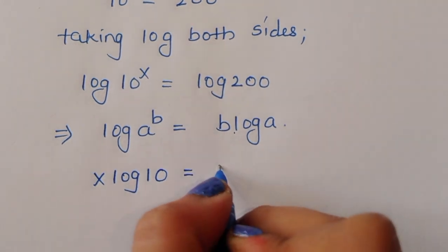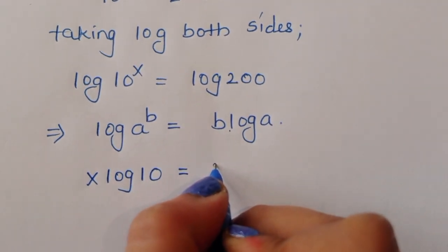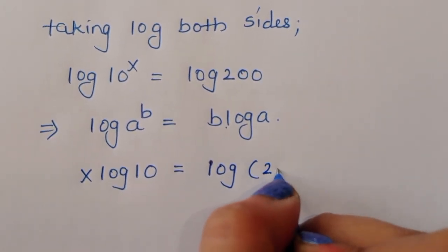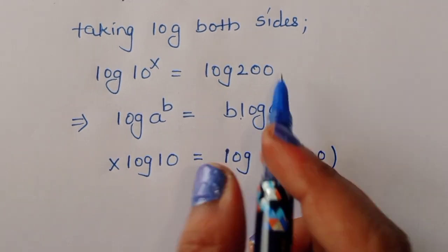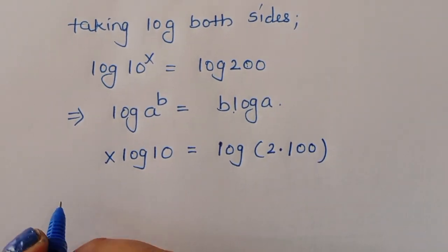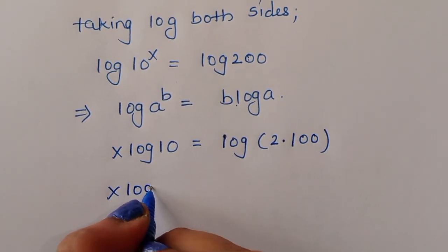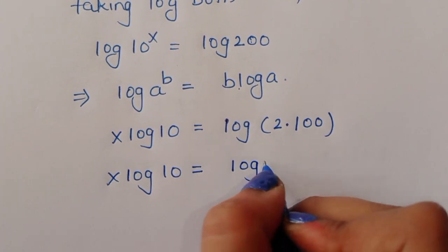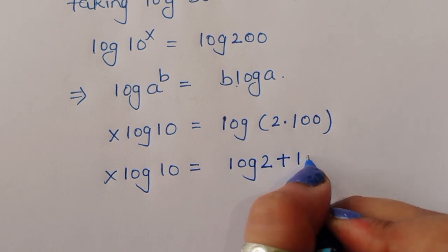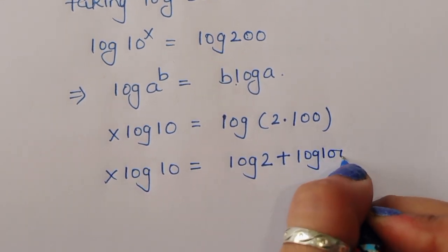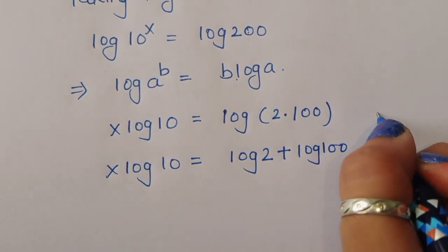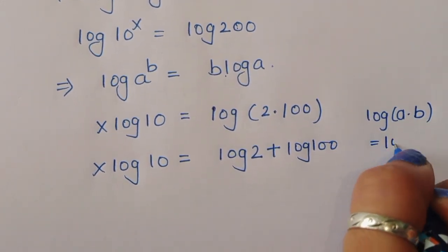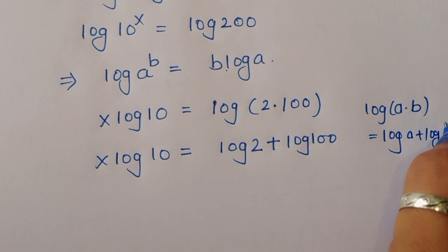So x log 10 is equal to log of 200. We can write log of 200 as log of 2 plus log of 100, because the formula says log of a times b equals log of a plus log of b.